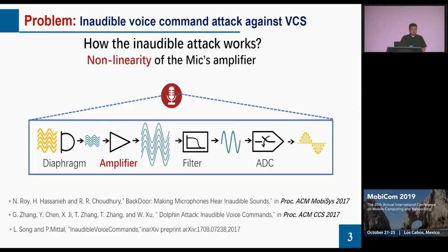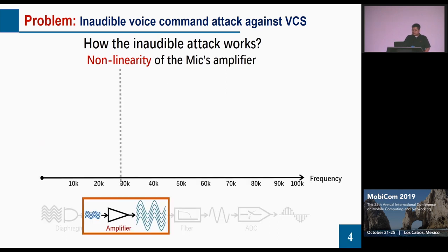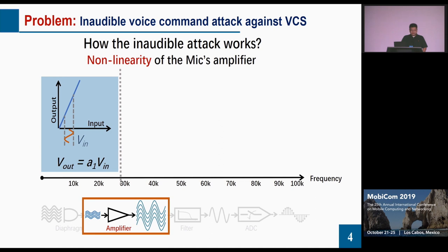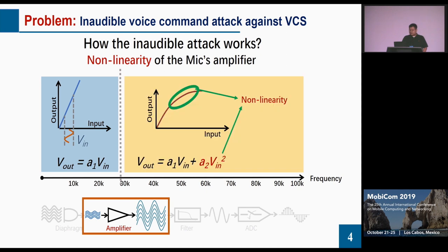Researchers from different groups reveal that the non-linearity of the microphone's amplifier is the reason why such attacks can succeed. The behavior of the amplifier depends on the input signal's frequency. For low frequency input signals, the amplifier is linear, but for signals with higher frequency, the amplifier is non-linear — that is, the output signal contains the squared item of the input signal. This was also mentioned by Professor Yang in the previous talk.